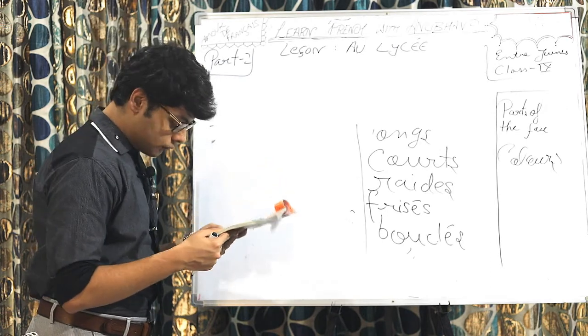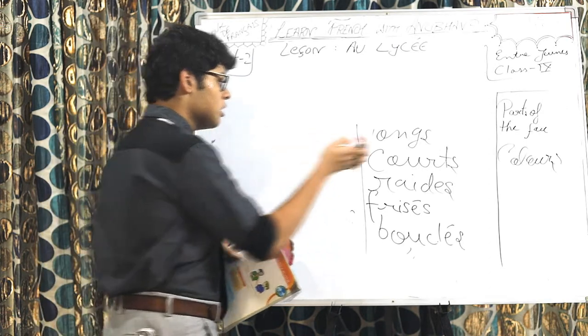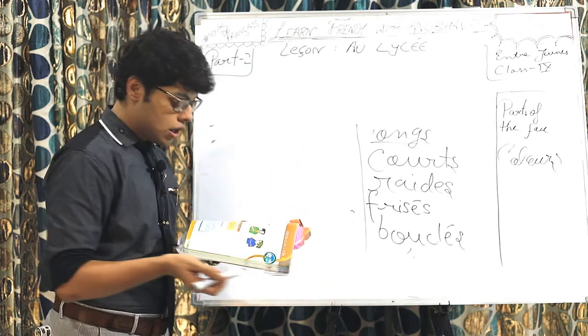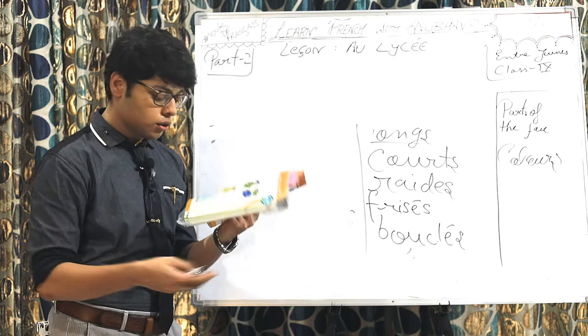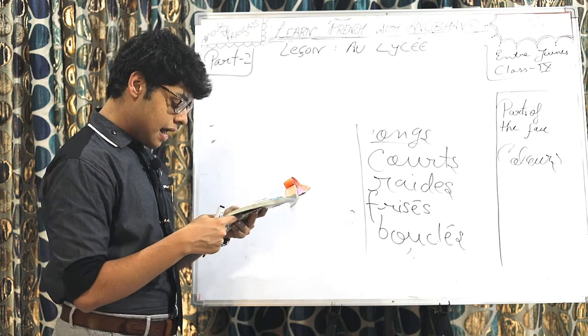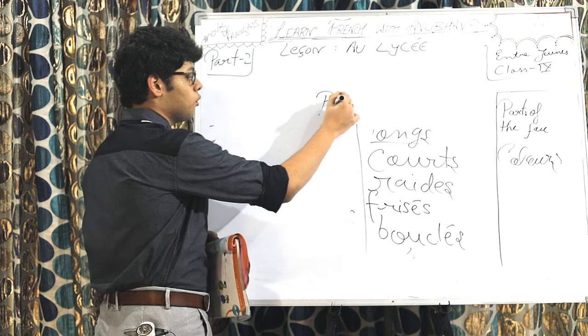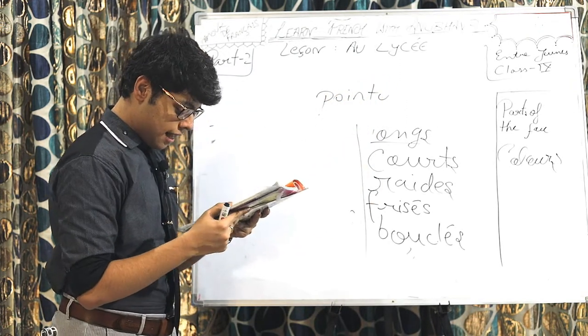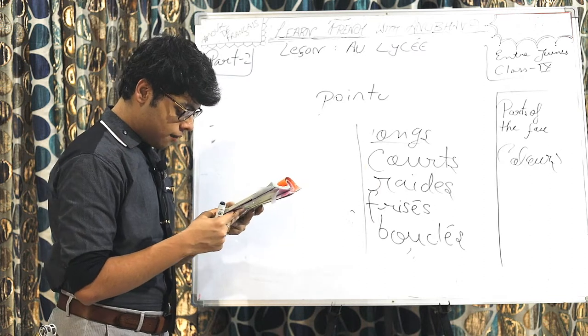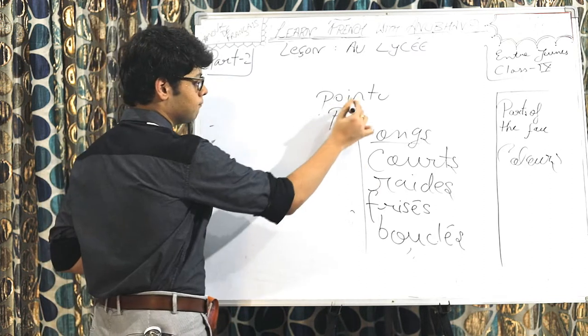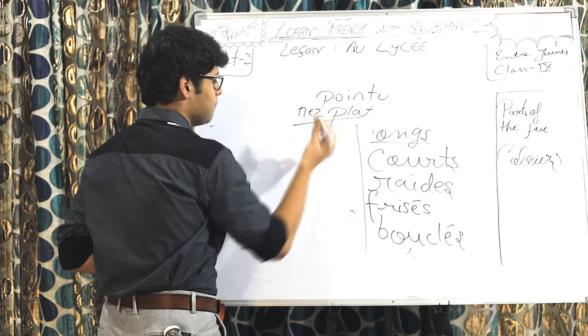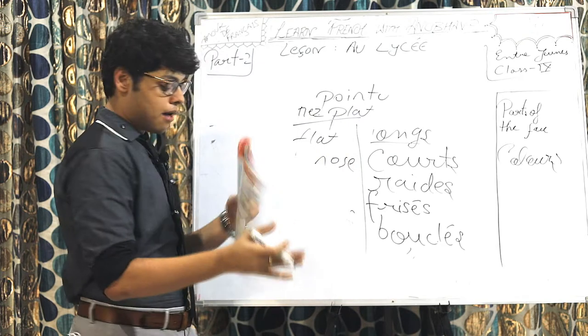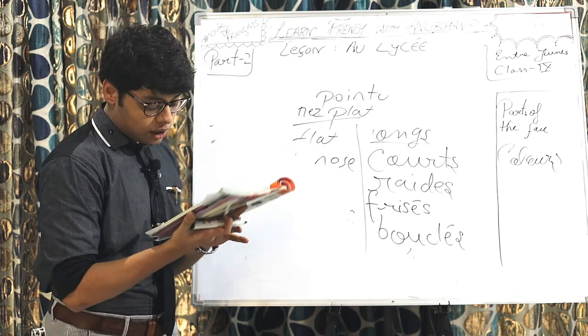Then, we are talking about the nose. Whether the person has a long nose or big nose or pati ne, small nose. Ne, a pointu, pointed nose. Or, il, el, a, a ne, pla. Ne, pla, flat nose. We have discussed about the appearance of the nose also.